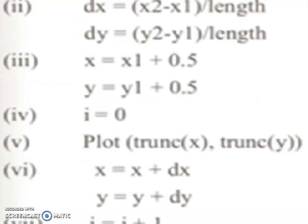Next step: dx = (x2-x1)/length. dy = (y2-y1)/length. Next step: increment by 0.5. x = x1 + 0.5, then y coordinate is y1 + 0.5.